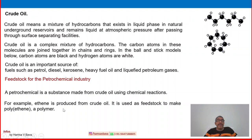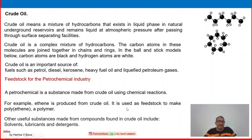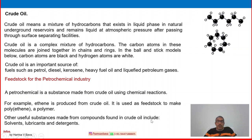From ethane, various chemical reactions are conducted to make ethylene or polyethylene, a polymer. So crude oil has many applications — many sources of feedstock for value-added products in the refinery, plus feedstock for petrochemical products. Other useful substances made from compounds found in crude oil include solvents, lubricants, and detergents.